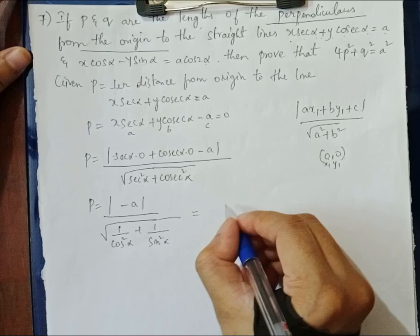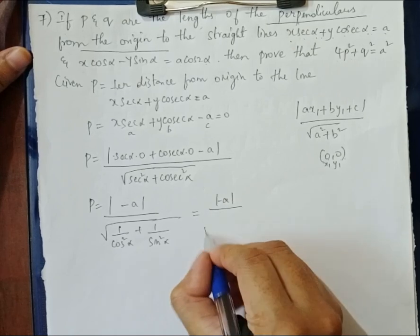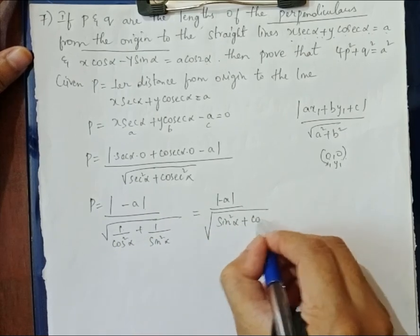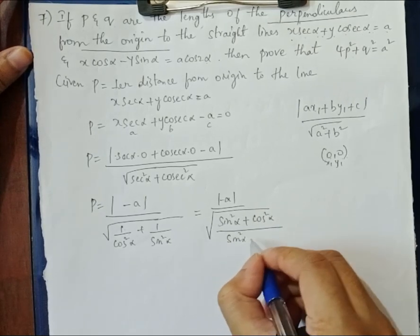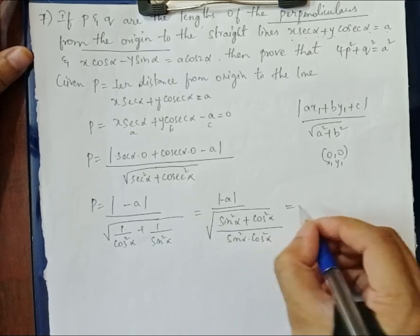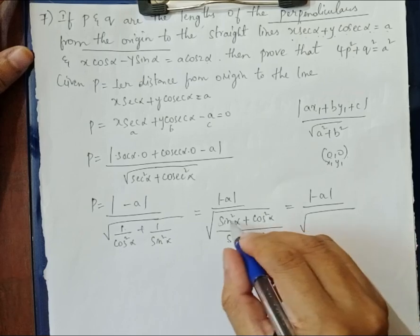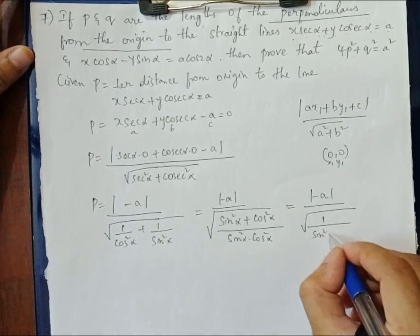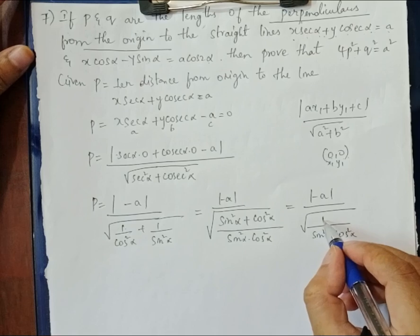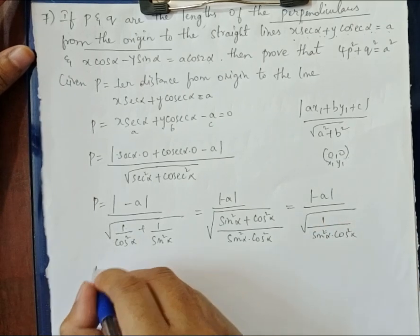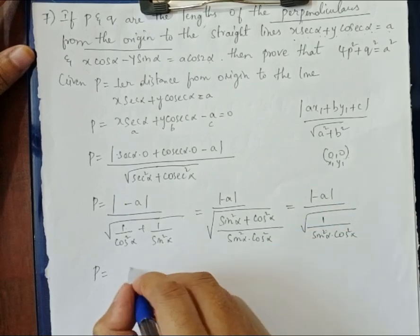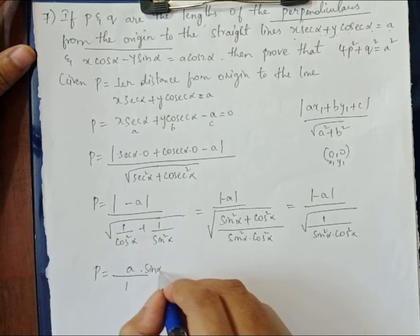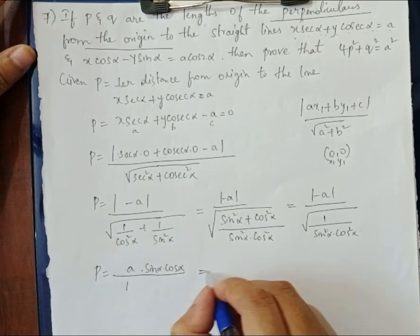So it becomes |−a| / √((sin²(α) + cos²(α)) / (sin²(α)·cos²(α))). Since sin²(α) + cos²(α) = 1, this simplifies to |a| / √(1/(sin²(α)·cos²(α))). Taking the square root and reciprocal, p = a·sin(α)·cos(α).